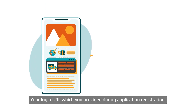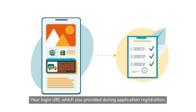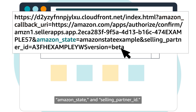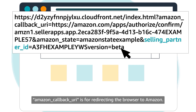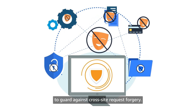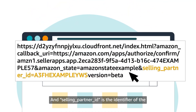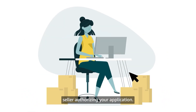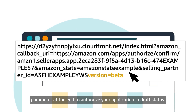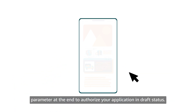Then click the Login Now button. Your login URI, which you provided during application registration, will load into the browser. It will be combined with the parameters: Amazon Callback URI, Amazon State, and Selling Partner ID. Amazon Callback URI is for redirecting the browser to Amazon. Amazon State is a state value generated by Amazon to guard against cross-site request forgery. Selling Partner ID is the identifier of the seller authorizing your application. For this test workflow, be sure to add the VERSION=BETA parameter at the end to authorize your application in draft status.